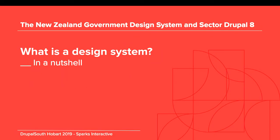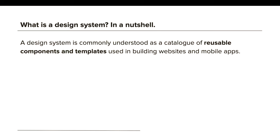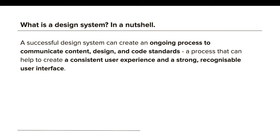So let's dig in — what is a design system in a nutshell? Design has always been about systems and how to create products in a scalable and repeatable way; systems that enable us to manage the chaos and create better products. Airbnb is one of the leading initiatives here. A design system is commonly understood as a catalog of reusable components and templates used in building websites and mobile apps, but a successful design system creates an ongoing process to communicate content, design, and code standards.